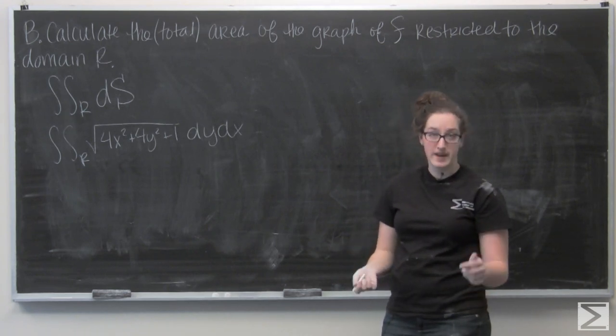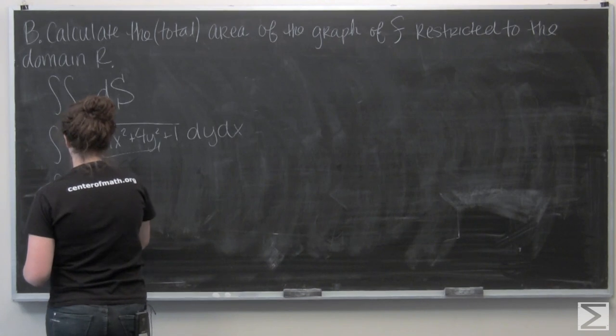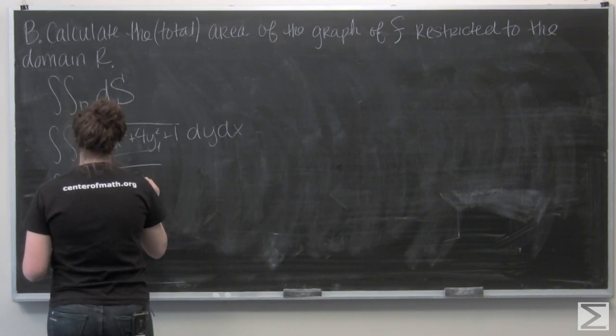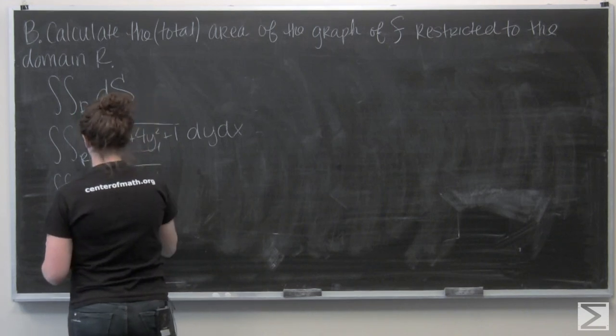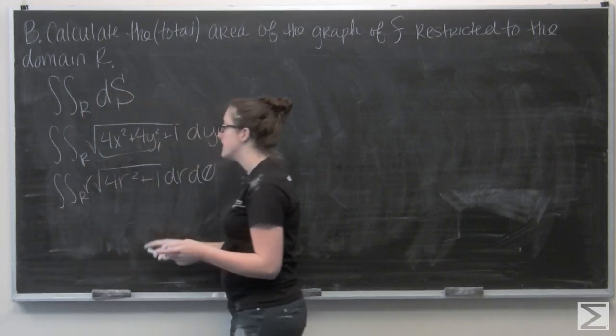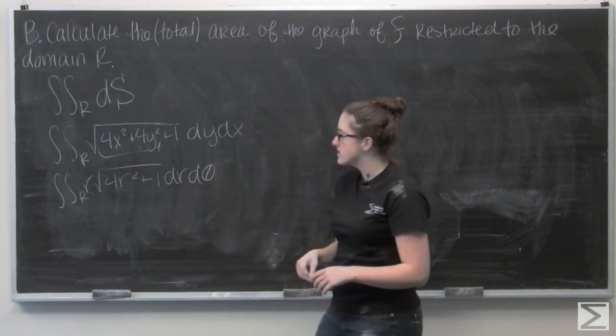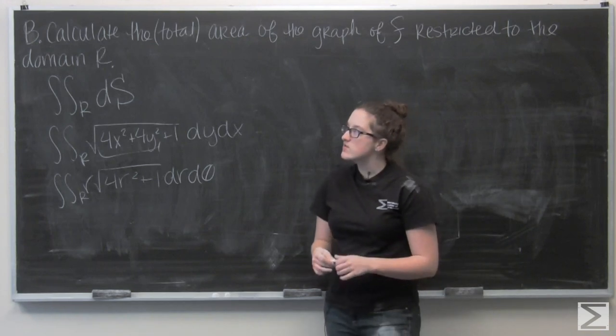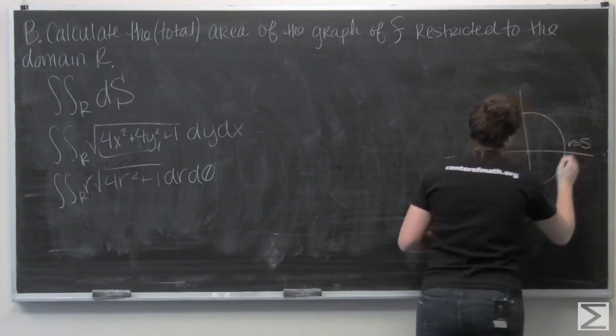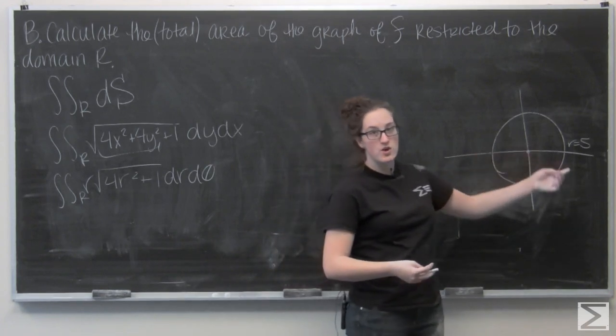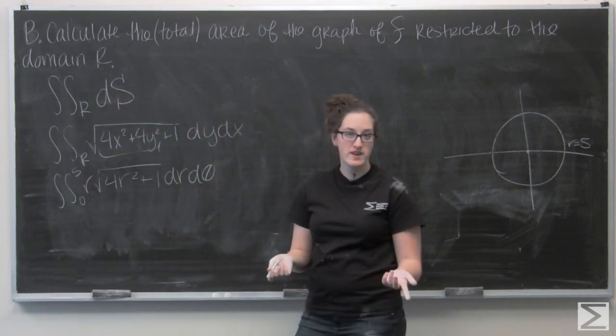So remember, r squared equals x squared plus y squared. So I can sub out that portion for an r squared. And then dy dx will become r dr d theta. And then that's nice because now I see something that I can use the chain rule for in a minute. But we still need to work on our bounds of integration. So I know I'm working with r and theta. And our region is a disk of radius 5 centered at the origin. So it's pretty easy to see that r is going to go from 0 to 5. And then our disk goes all the way around. So theta is going to go from 0 to 2 pi.